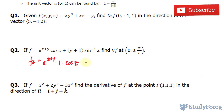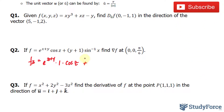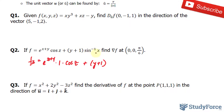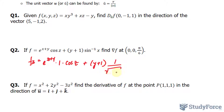Moving on to the second term, (y plus 1) is a constant factor, and the derivative of arcsin(x) is 1 over the square root of (1 minus x squared). We'll have to evaluate this at (0, 0, π/6).